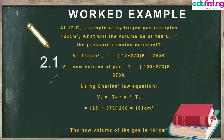Worked example for Charles' Law: at 17°C, a sample of hydrogen gas occupies 125 cm³. What will the volume be at 100°C if the pressure remains constant? Listing our parameters: 17°C is T₁, and since Charles' Law requires temperature in Kelvin, we add 273, giving T₁ = 17 + 273 = 290 K. V₁ = 125 cm³.